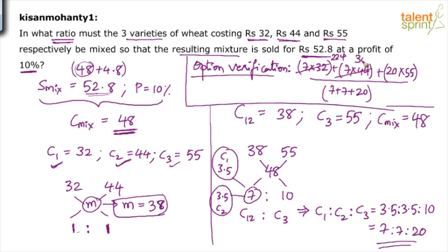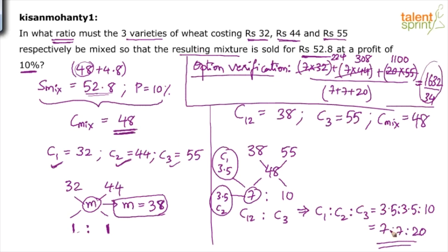Checking: 7×32 = 224, 7×44 = 308, 20×55 = 1100. Total = 1100 + 308 + 224 = 1632. Denominator = 7 + 7 + 20 = 34. So 1632 ÷ 34: split 1632 as 1700 − 68; 1700 ÷ 34 = 50 and 68 ÷ 34 = 2, giving 50 − 2 = 48. Yes, it equals 48. So the answer is 7 : 7 : 20, though it's a lengthy process when options aren't given.